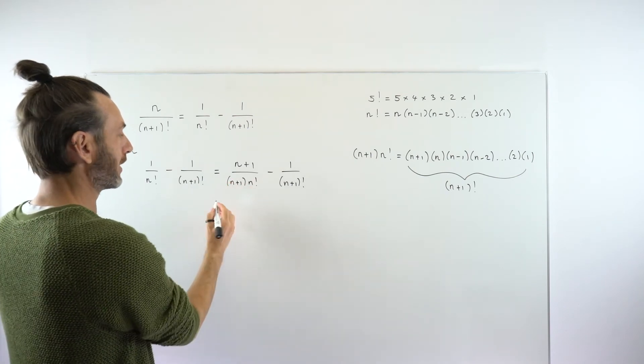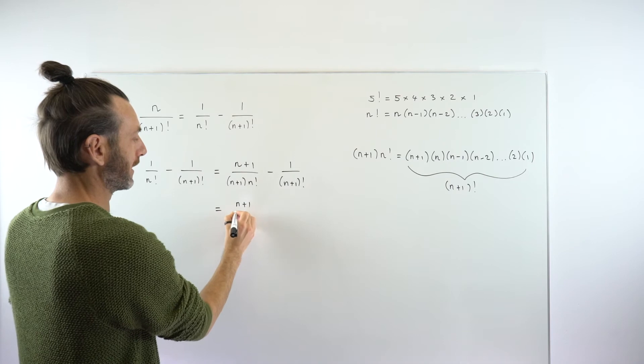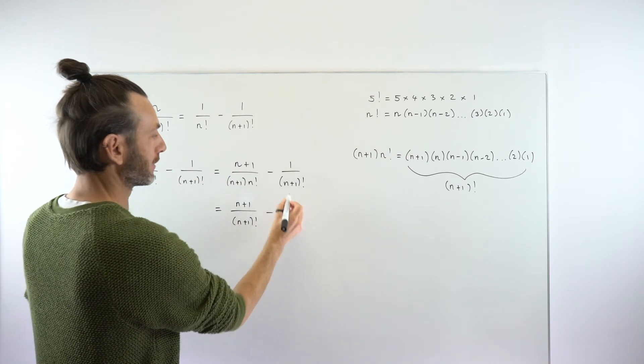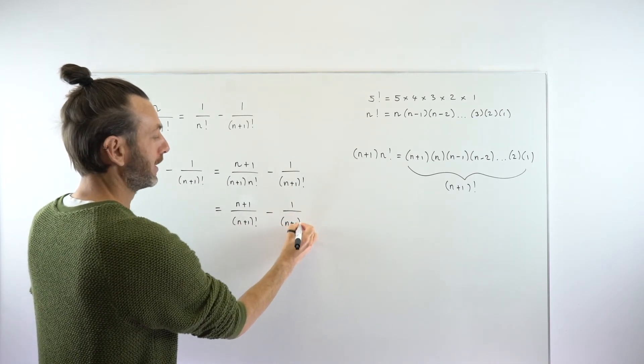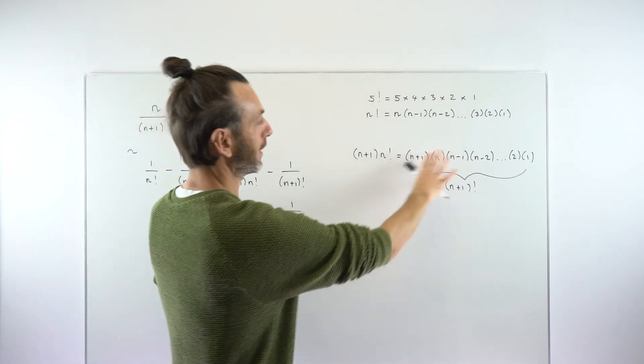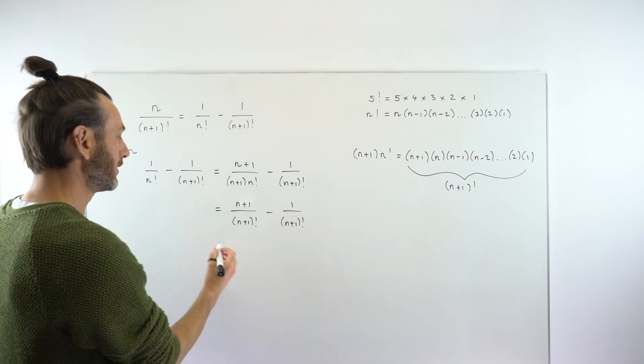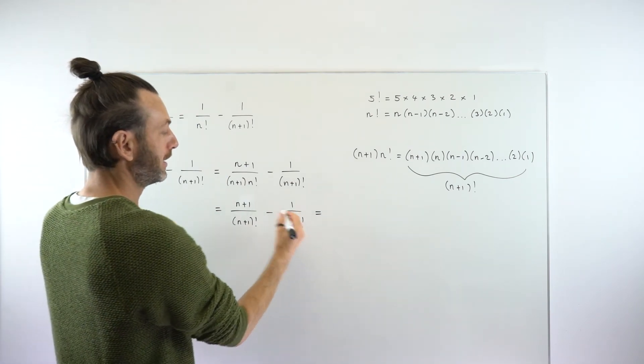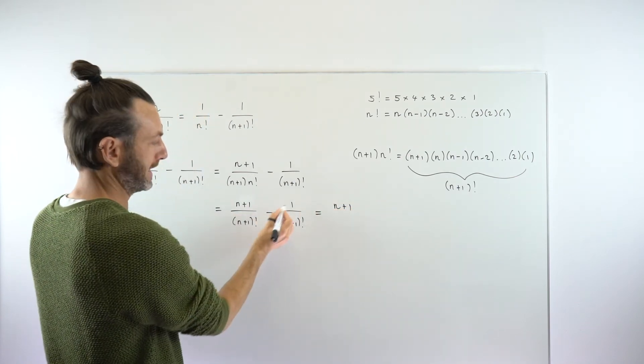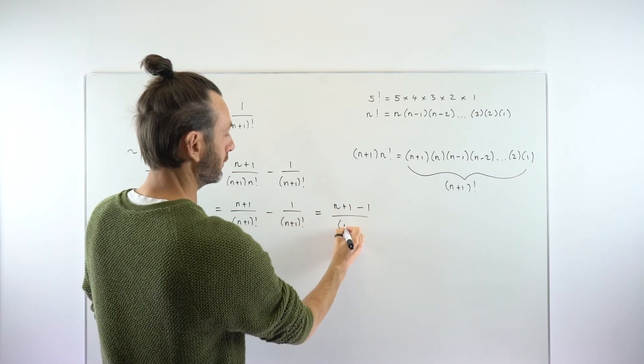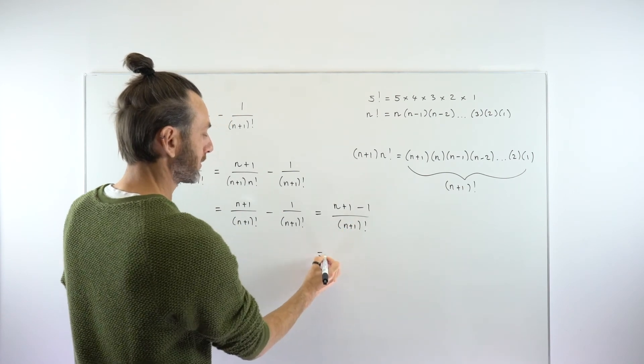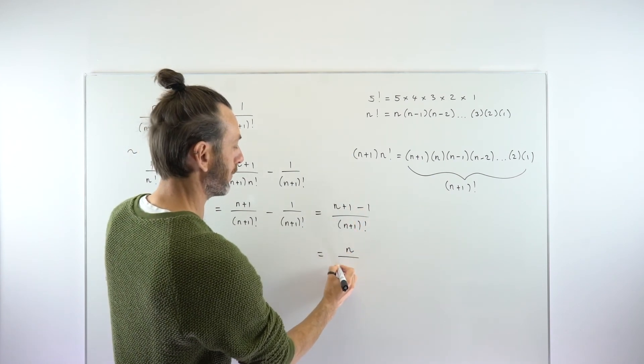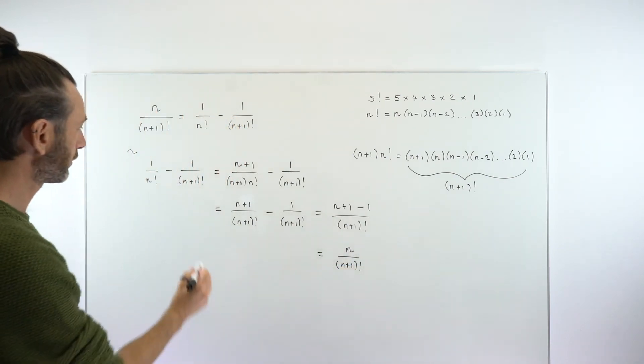So that tells us our denominator on this first fraction can be rewritten. The numerator will stay the same, n+1. The denominator, though, is just (n+1) factorial. And of course, that now lines up with the denominator of our other fraction. So by doing that little algebraic trick and by knowing a little bit about how factorials work, we've been able to make a common denominator. So taking this forward, we've now got two fractions that we can combine. The numerators will combine, so it's going to be (n+1) minus 1 over our common denominator, which is (n+1) factorial. Just a little bit of tidying up to do now. So n+1 minus 1, the ones obviously cancel, and we're just left with n over (n+1) factorial.